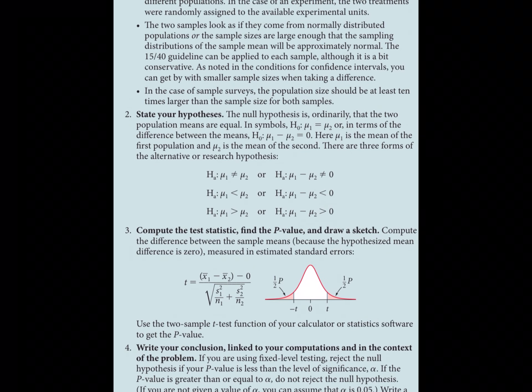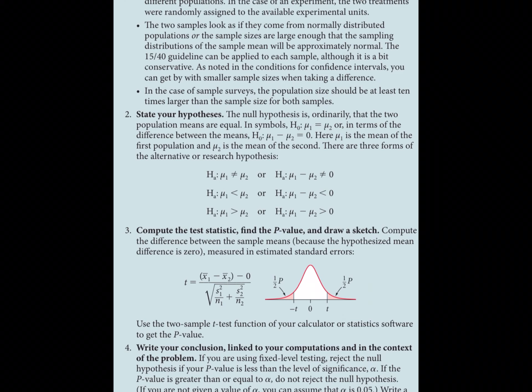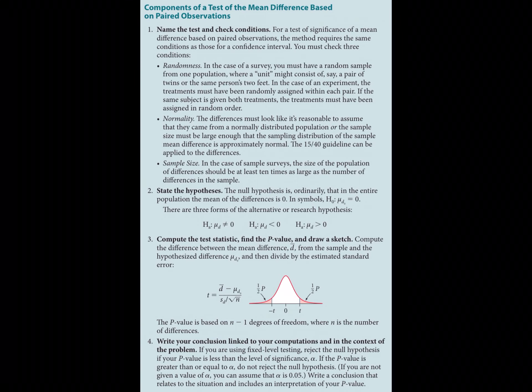Whether comparing two means, we still get a test statistic t and a p-value, just like with a single mean. The tricky case is the paired observation test, used when your two groups are not independent of each other. Heart rate data is a common example — people's heart rates are not completely independent from other factors in their lives, and certain people simply have different resting heart rates than others.